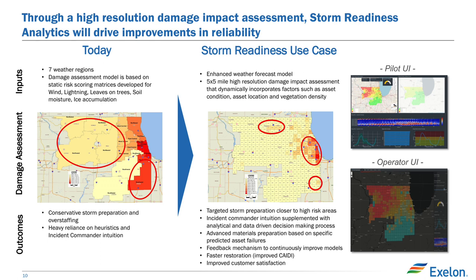Our vision with the storm readiness use case was to say, with all of the changes in the weather space, we know the weather much more precisely. Can't we do a better job of using that precise, high-resolution weather and machine learning?